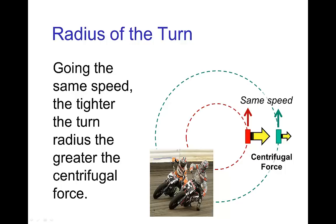In this case, the two motorcyclists, if they're going the same speed in miles per hour, then the one on the inner turn has a greater centrifugal force than the one on the outer turn. So tighter the turn, for a given speed, the larger the centrifugal force.